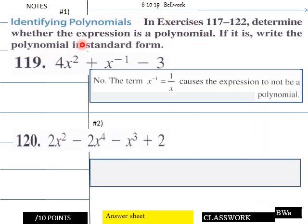Okay, welcome back for our solutions for today's bell work. And for this one up here, know the term x to the negative one power, this one here, equals one over x, which causes the expression not to be a polynomial.